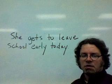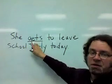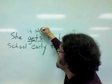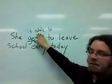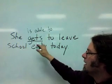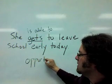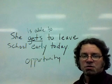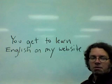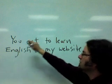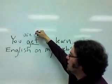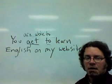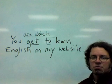She gets to leave school early today is in the present tense, and it's very similar to 'be able to.' 'Gets to' is the same thing as 'is able to,' and it's an expression of opportunity — it sounds like a good situation. You get to learn English on my website. 'Get to' is the same thing as 'are able to,' meaning you have the opportunity to learn English.